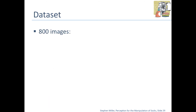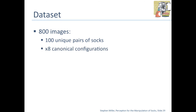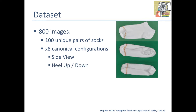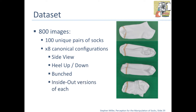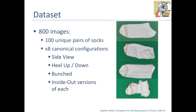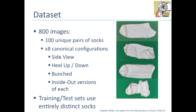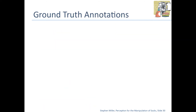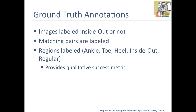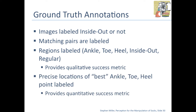A bit about the dataset: we have 800 images corresponding to 100 unique pairs of socks in eight configurations. The sock will be seen from the side, the heel can be up or down, it can be bunched, and then inside-out versions of each. Importantly, our training and test sets used entirely distinct socks — regardless of configuration, you have never seen the sock you're testing on before. We have ground truth annotations labeling inside-out socks, matching pairs, regions labeled as ankle or toe, and precise landmark points for quantitative evaluation.